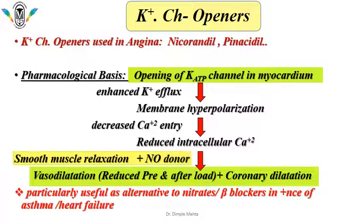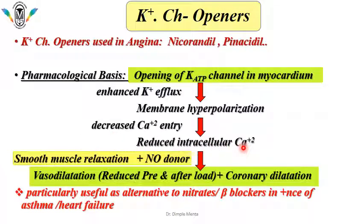After calcium channel blockers, we have potassium channel openers. Potassium channel openers used in angina are nicorandil and pinacidil. They are also NO donors like nitrates. They can open up ATP-sensitive potassium channels in the myocardium, causing enhanced potassium efflux, membrane hyperpolarization, and decreased calcium entry. This reduces intracellular calcium availability, causes smooth muscle relaxation, and with nitric oxide donation, results in more vasodilatation with reduction in preload and afterload, plus coronary vasodilatation. Potassium channel openers are particularly useful as an alternative to nitrates or beta blockers in the presence of asthma or heart failure.